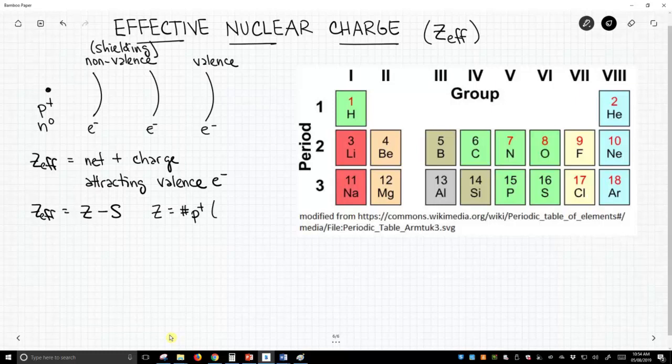Well, what are these two things? Z is equal to the number of protons that we have in the atom. And this, it turns out, is simply equal to the atomic number. S is equal to the number of shielding electrons. That is the number of electrons in our nonvalence or shielding shells.